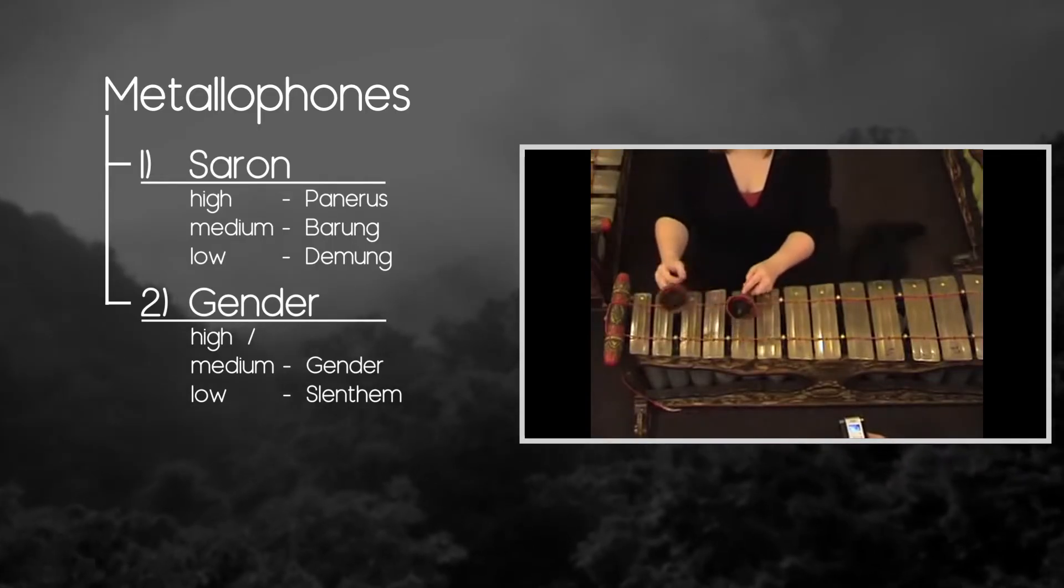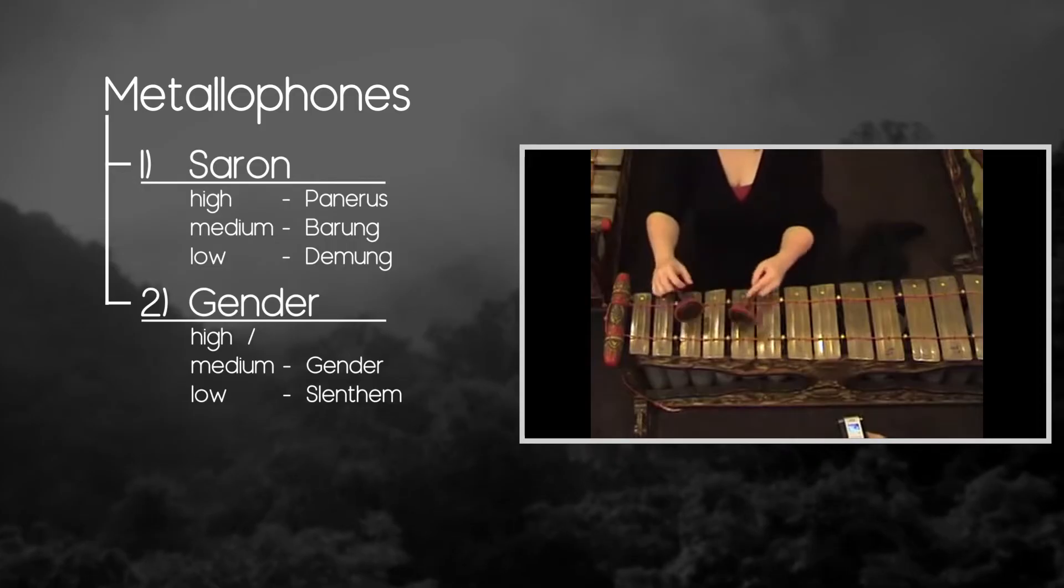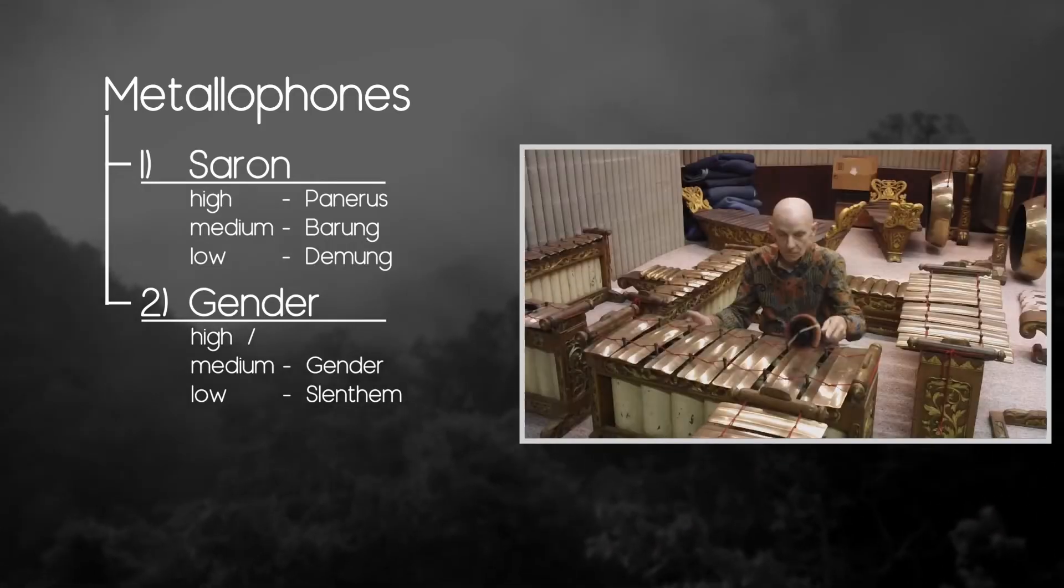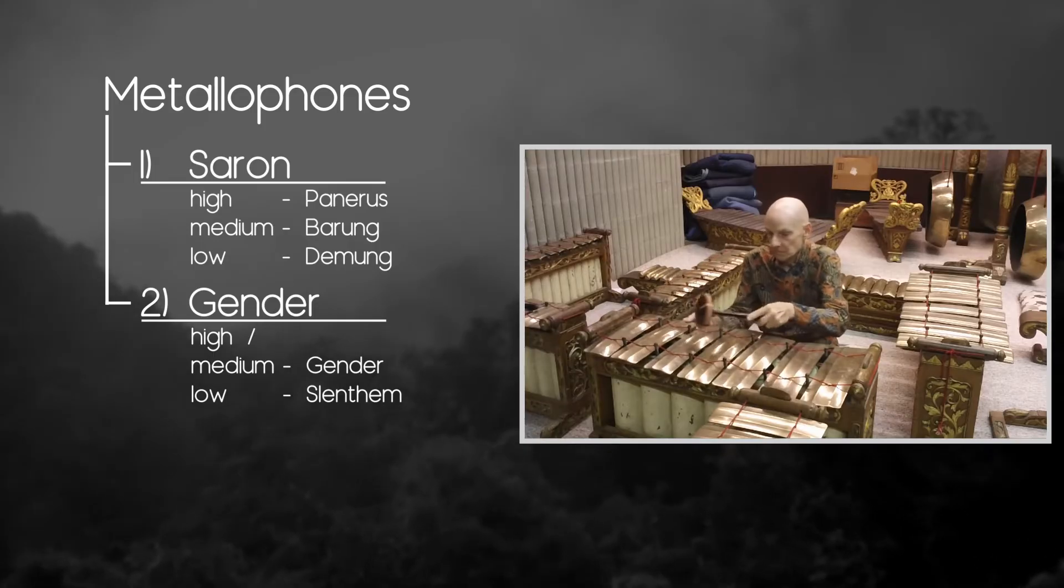It consists of 10 to 14 bronze bars that are suspended by rods over tuned resonators made from bamboo or metal. The lower pitched version of Gender is called Slenthem.